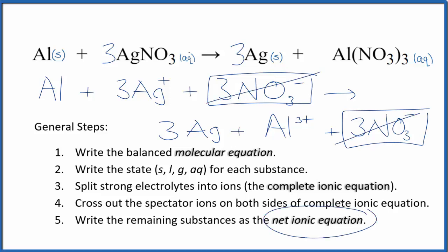So this is the net ionic equation for Al plus AgNO3. I'll clean it up, write the states, we'll have our net ionic equation.